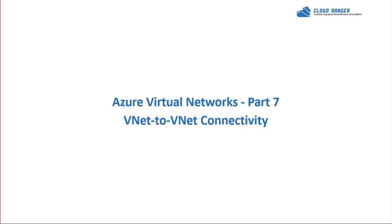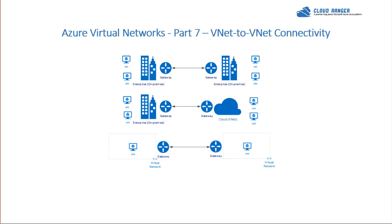There are three topologies to consider for site-to-site connectivity. The first is two on-premises networks — something you may already be used to if you have a branch office or two data centers connected to each other. This requires two gateways or VPN devices capable of bringing up an IPsec tunnel, allowing virtual machines on each side to communicate through that tunnel.